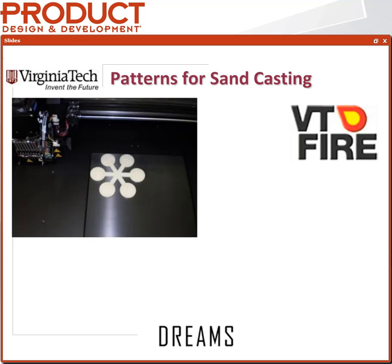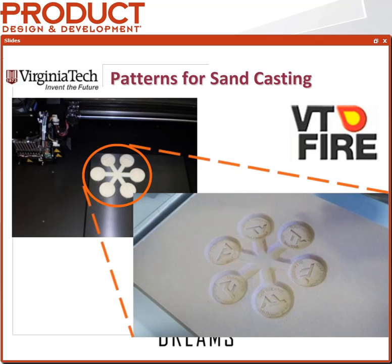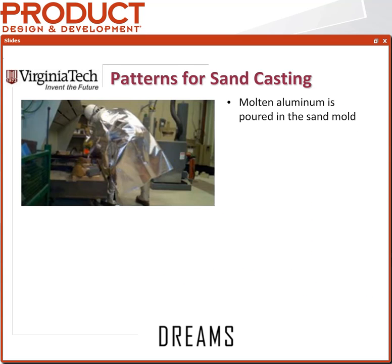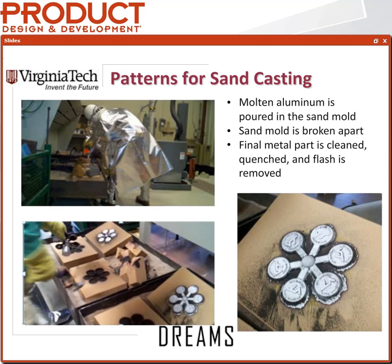Similarly, in sand casting, we can print patterns directly to embed into foundry sand. We tend to use the Objet process here for its high surface finish and resolution — allowing very small lettering that translates nicely into sand. We have a foundry at Virginia Tech to teach foundry engineering and explore new technologies. We pour aluminum straight into the sand, break the mold apart, and end up with an aluminum piece originally designed digitally and printed in polymer.